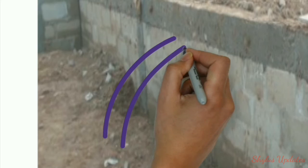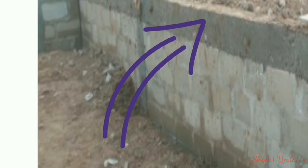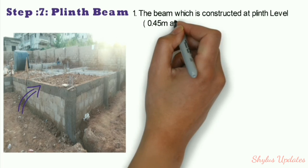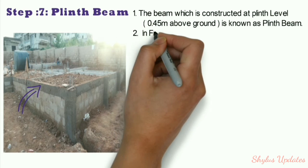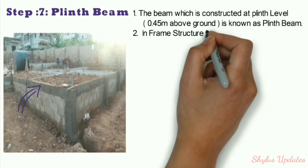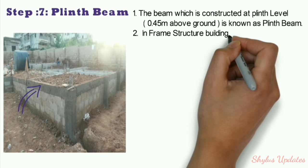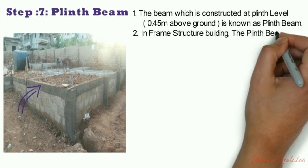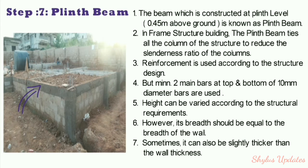Step 7: Plinth beam. The beam constructed at plinth level is known as the plinth beam. In a frame structure building, the plinth beam ties all columns of the structure to reduce the slenderness ratio of the columns. Minimum reinforcement uses 2 main bars at top and bottom of 10 mm diameter. Its breadth should be equal to or slightly thicker than the wall thickness.